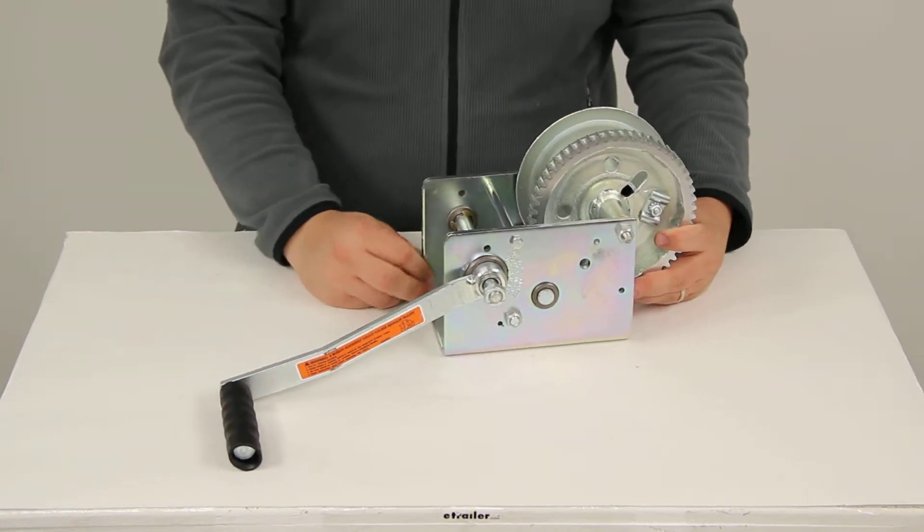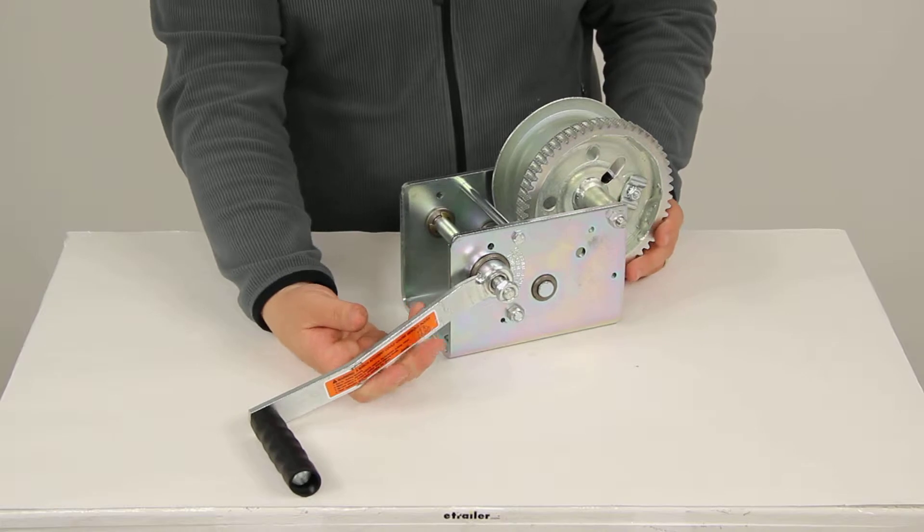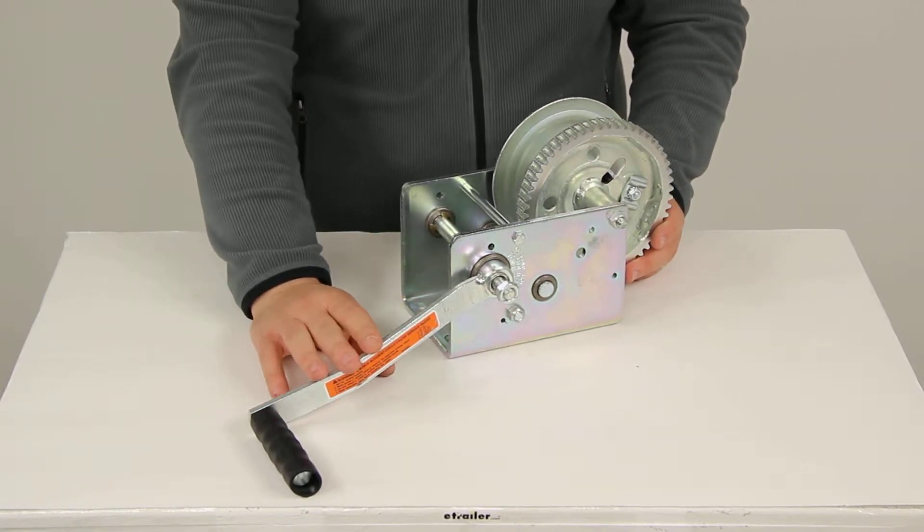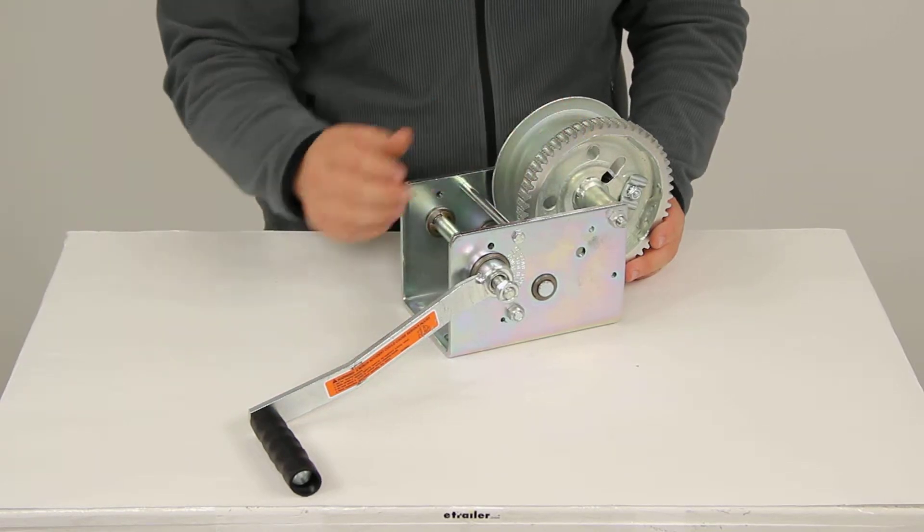The Dutton Lanson brake winch is going to offer us a 17.3 to 1 gear ratio. So, for every 17.3 full turns of the handle, our hub is going to complete one full rotation.